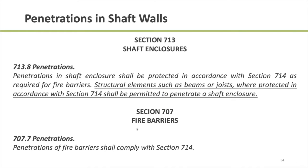Another topic that comes up when designing and detailing shaft enclosure walls is penetrations. There's clear language in the building code for things like extending a sprinkler line or ductwork into or through a shaft enclosure wall. One aspect that isn't referenced as often is structural penetrations of shaft enclosure walls. Section 713.8 specifically says that structural penetrations of shaft enclosure walls are permitted, but when you do have them, you need to protect them in accordance with Section 714.